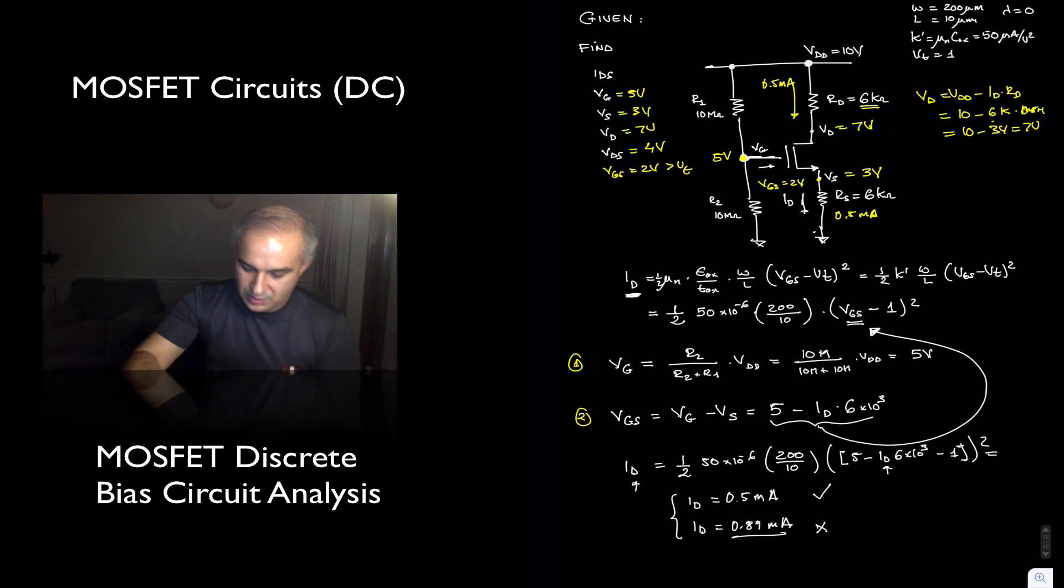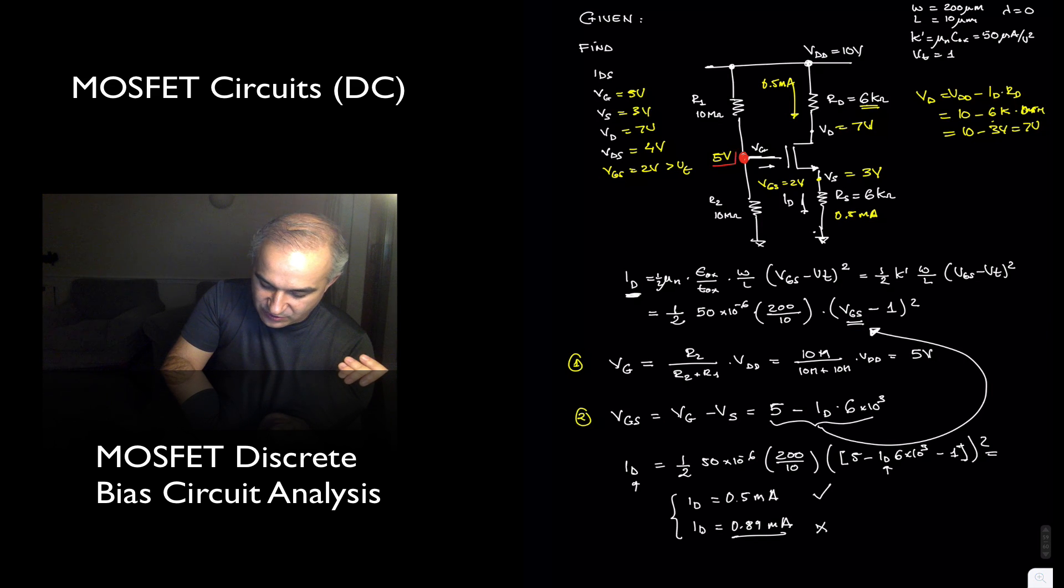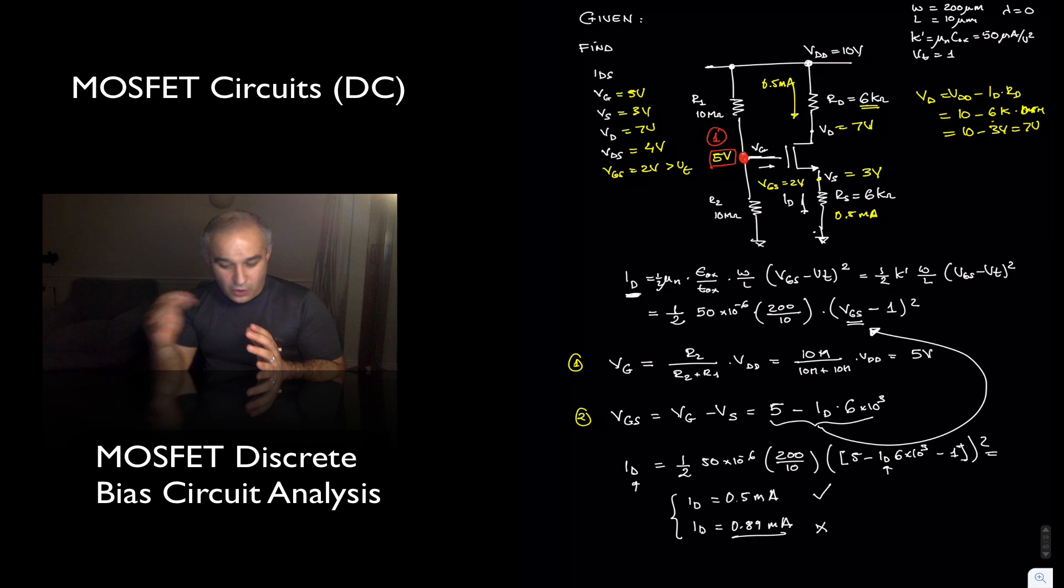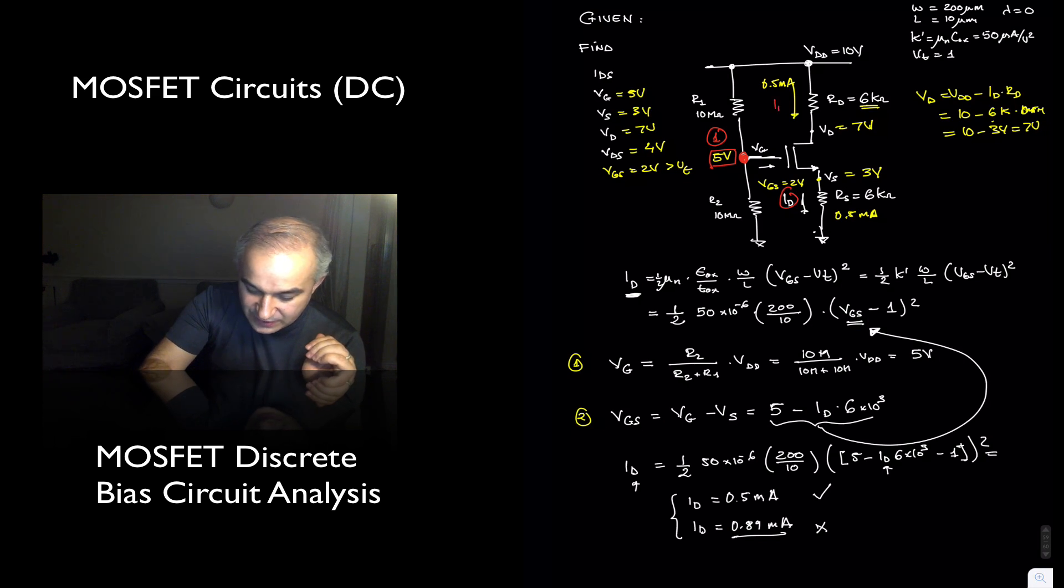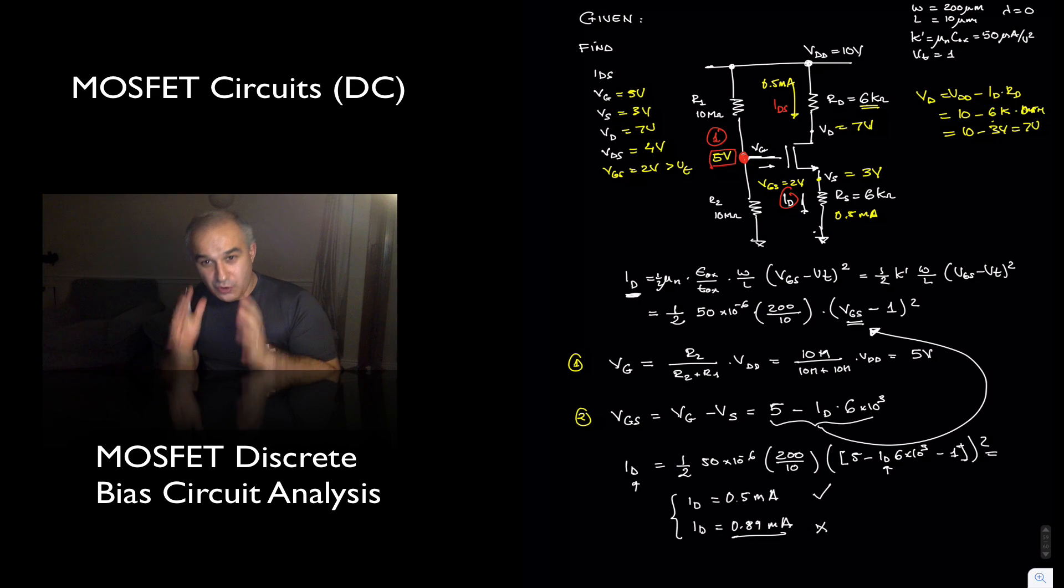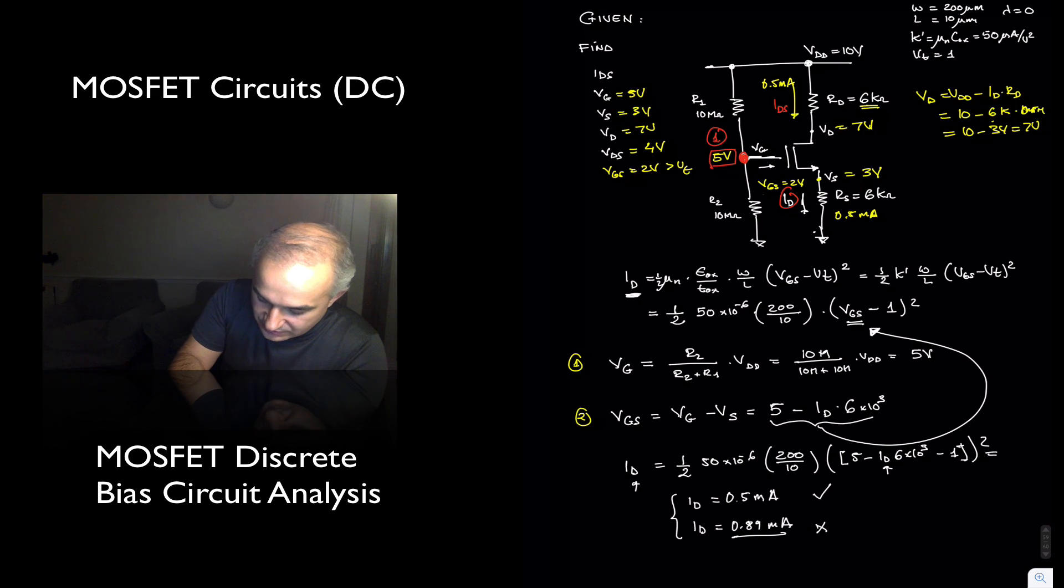So let's quickly recap. Since we have a voltage divider in a MOSFET, we are always able to find the voltage at the gate in the 4 bias configuration in discrete amplifier. R1 and R2 equal value, 5 volts. This is our step one. In order to find all the other voltages, what we need to find is the current, the drain current.